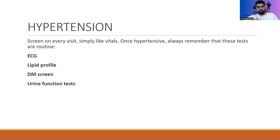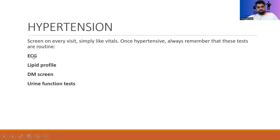Hypertension — we screen on every visit. This is not likely asked as a specific screening test, but we should know it is just a vital measurement. According to guidelines, we don't have a specific age group or frequency. However, what they commonly test is that once hypertension is diagnosed, there are four routine tests: ECG, lipid profile, diabetes mellitus screening, and urine function test — all four regardless of other risk factors.